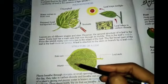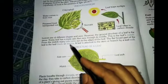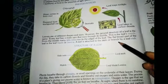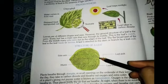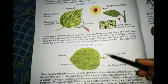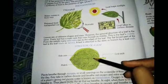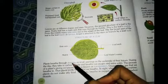These are the side veins. The flat broad part of the leaf is the leaf blade or lamina. A leaf is attached to the stem or branch by a leaf stalk — this part helps the leaf attach to its stem or branch. So, this is the midrib, these are the side veins, this is the lamina or leaf blade, and this is the leaf stalk of the leaf.